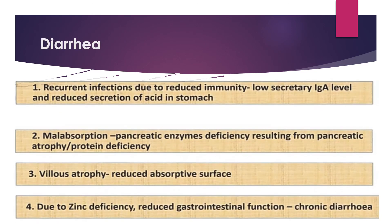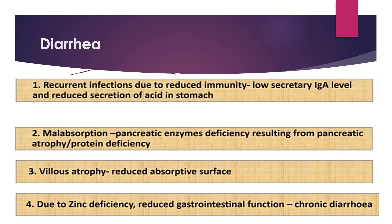Diarrhea occurs due to four reasons. First, recurrent infection due to reduced immunity — malnourished patients have decreased T lymphocytes, complement levels, and low secretory IgA levels, plus decreased gastric acid production, predisposing to diarrhea. Second, malabsorption — decreased pancreatic enzyme production from pancreatic atrophy and villus atrophy reduce absorptive surface. Third, zinc deficiency causes reduced gastrointestinal function and chronic diarrhea.